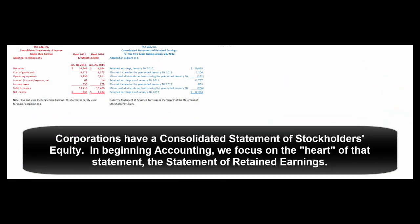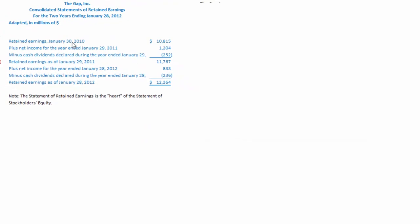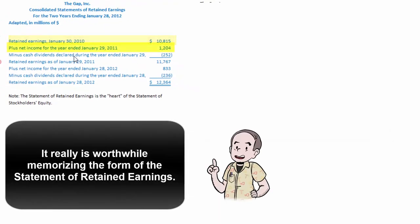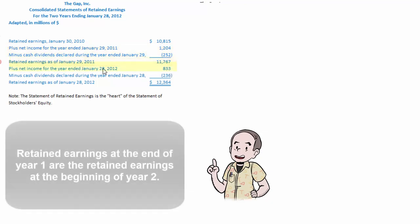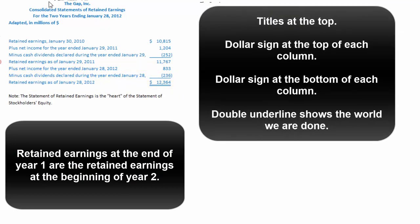Since Gap is a corporation, it has a consolidated statement of stockholders' equity, and the key part is the statement of retained earnings. Retained earnings at the beginning of the period, plus net income, minus dividends, gives retained earnings at the end — and that carries forward year to year. Just like all financial statements, there's the name of the company, the name of the statement, the period it covers, dollar sign at the top, single lines for addition or subtraction, and a dollar sign with double underline at the bottom to show we're done.